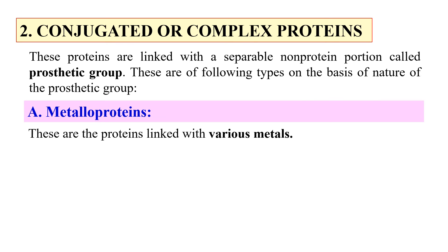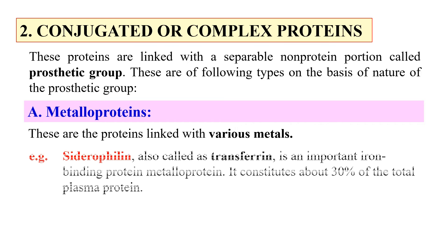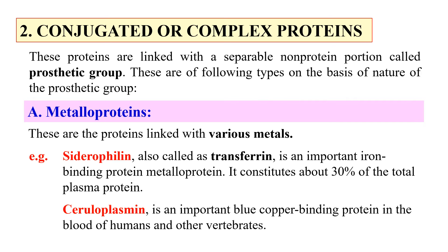First, metalloproteins. As the name indicates, metallo means metal — these proteins are linked with various metals, meaning their prosthetic group consists of metals. For example, siderophilin (also called transferrin), where the metal atom is iron. Second, ceruloplasmin, where the metal atom or prosthetic group is copper — these are copper-binding proteins present in human blood.